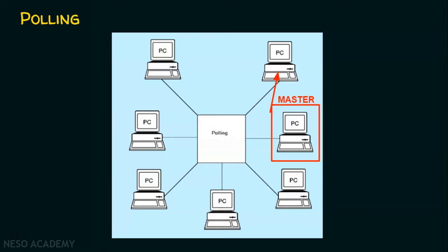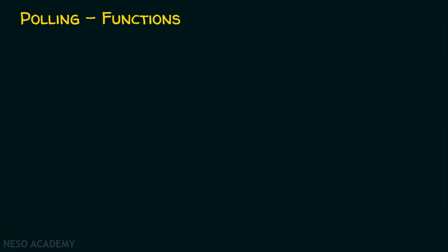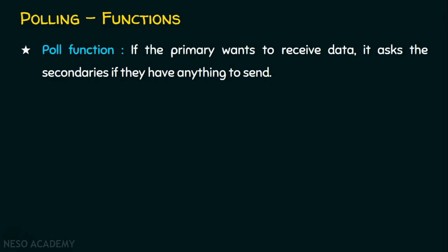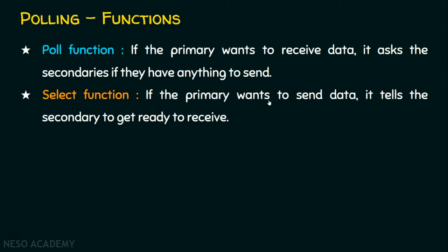Now you understand what polling is. Polling is associated with two functions. Function number one is the poll function, used by the master station. If the primary wants to receive data, it asks the secondaries if they have anything to send. The second function is the select function. If the primary wants to send data, it tells the secondary to get ready to receive. These are the two functions used in the polling method.